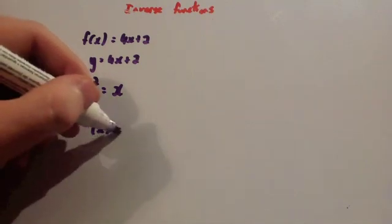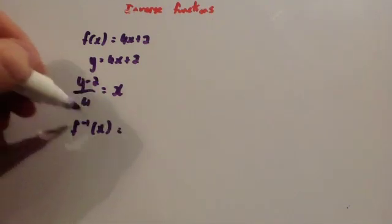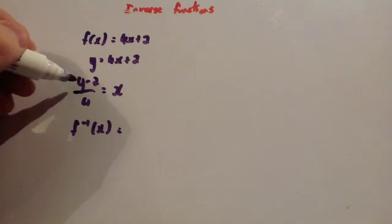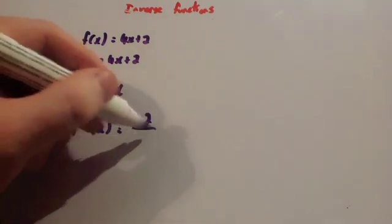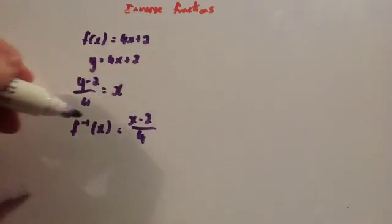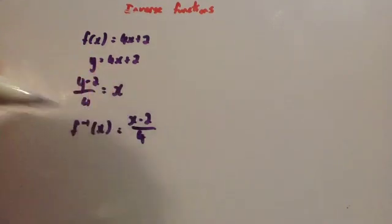f to the minus 1 of x equals, and then you write this expression, but you write it in terms of x. So you write x minus 2 over 4. The inverse function of x would be x minus 2 over 4.